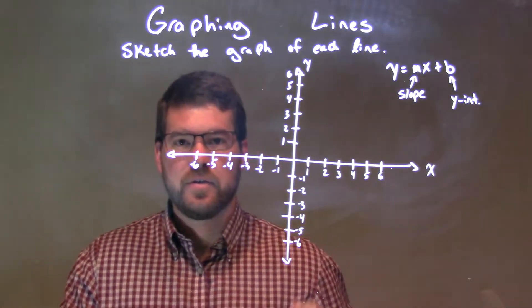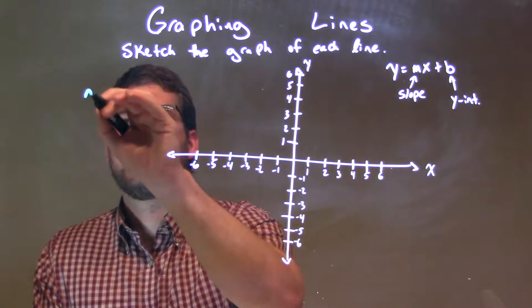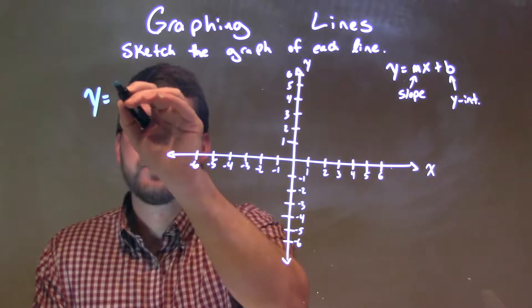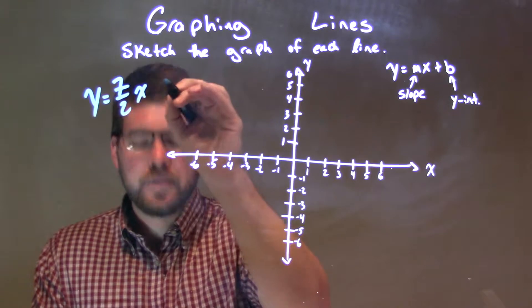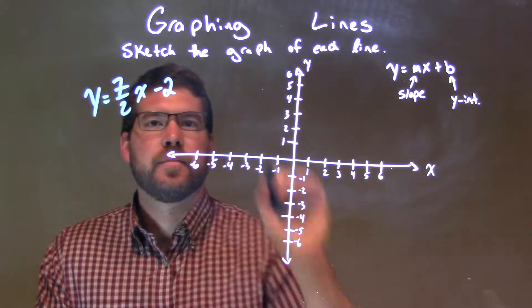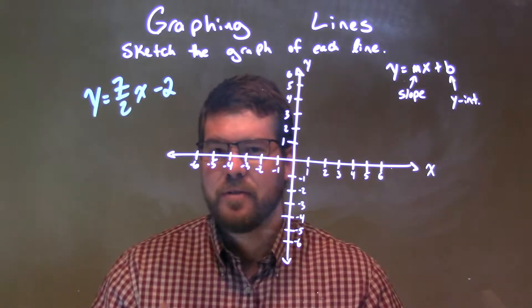If I was given this equation, y equals 7 halves x minus 2. Okay, 7 halves x minus 2.